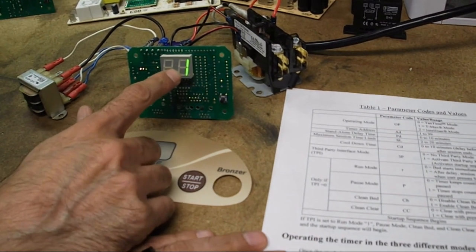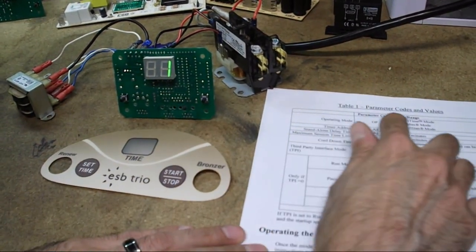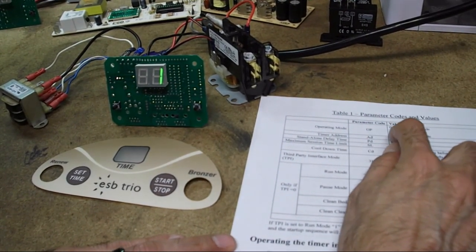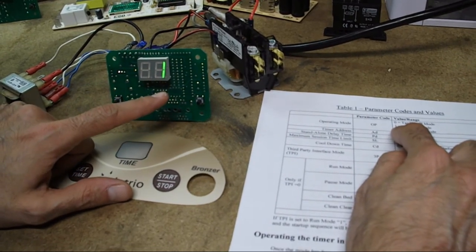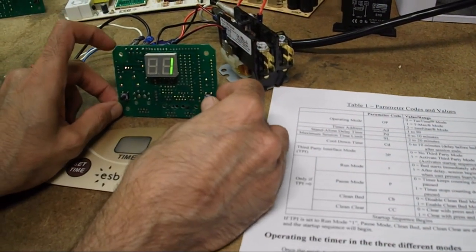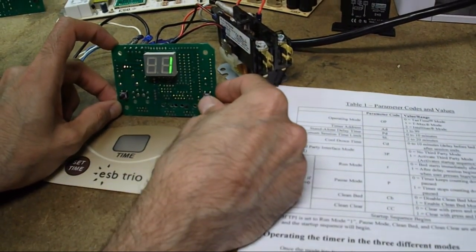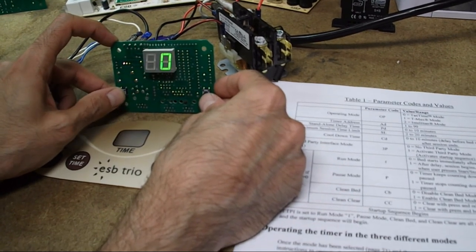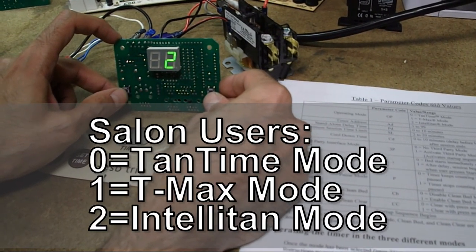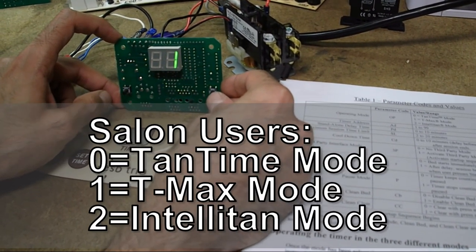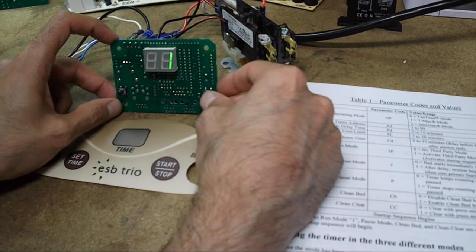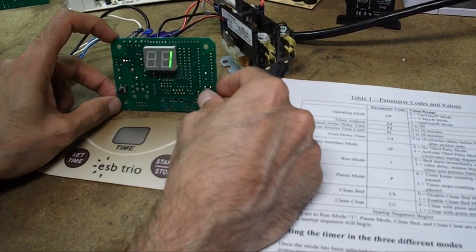This right now is telling you that the operating mode is set to 1. It can either be 0, 1 or 2. 1 is the factory setting. If you wanted to modify it for some reason, you would hit the set time button and you can actually change the value. And you can see it can be a value of 1, 2 or 0 and it cycles through. So I'm going to leave it at 1. When you have it at the desired value, then press the start stop button and it's going to advance to the next parameter and then show you the value of it.